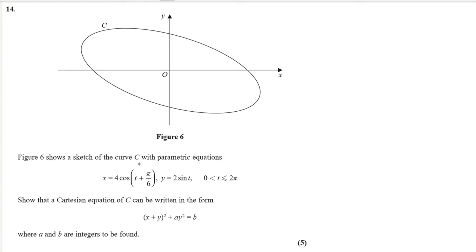Figure 6 shows a sketch of a curve with parametric equations x equals 4 cos(t plus pi over 6) and y is equal to 2 sine t. It says show that the Cartesian equation of c can be written in the form (x plus y) all squared plus a y squared is equal to b, where a and b are integers to be found. It's a five mark question, it's a question 14 and here is how I would solve it.